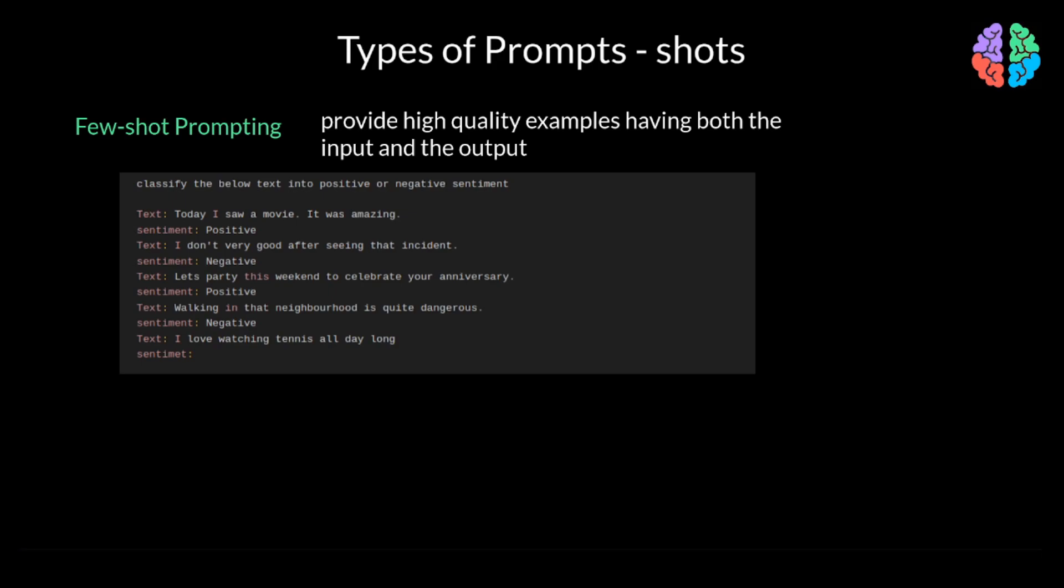And I can then leave the model to respond to the last text I entered. Typically, five to eight examples should be good enough for few-shot prompting. As you can guess by now, the drawback of this approach is that there are too many tokens that will get used when you want to give a lot of examples as input.